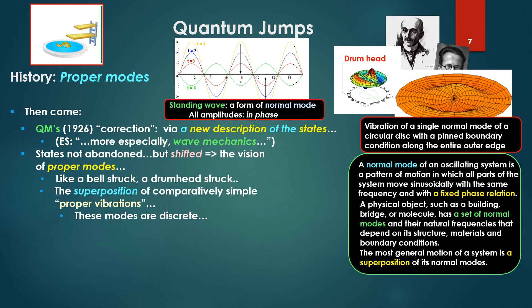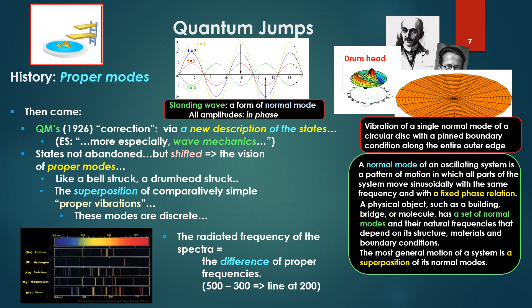The most general motion of a system is a superposition of its normal modes. Here we see the concept of superposition coming in. This is what Schrödinger meant by superposition. The radiated frequency of the spectra and the spectral lines becomes the difference of proper frequencies.